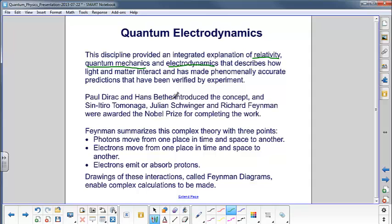Paul Dirac and Hans Bethe introduced the concept and Sin Itiro Tomonaga, Julian Schwinger and Richard Feynman were awarded the Nobel Prize for completing the work. It's deceptively simple in its concept and Feynman summarized it as follows.